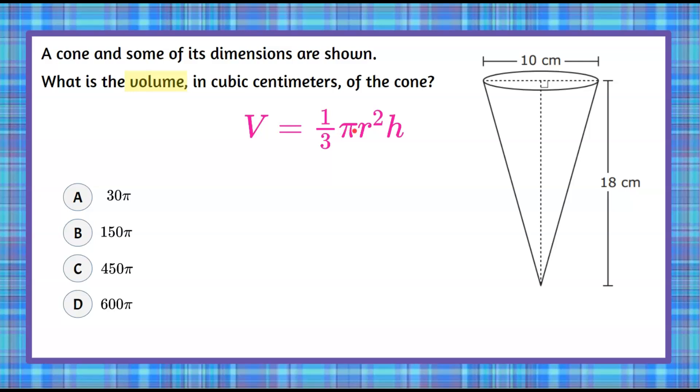So these are all being multiplied, one-third times pi times r squared times h. If we understand this, the volume is one-third the area of the base times the height. The area of the base of a cone is a circle, that's why we have pi r squared here.